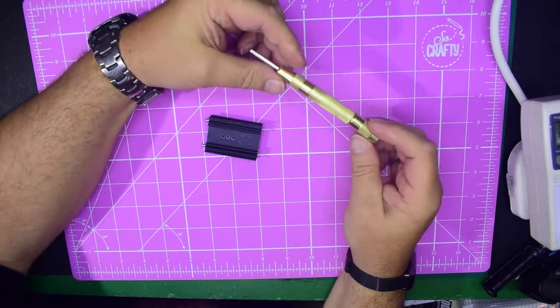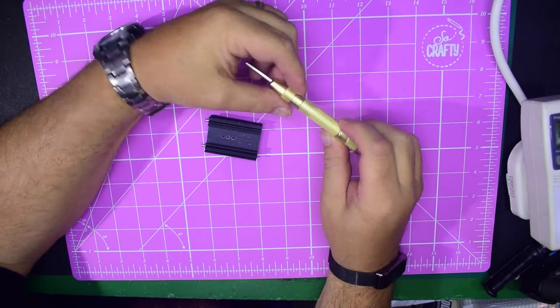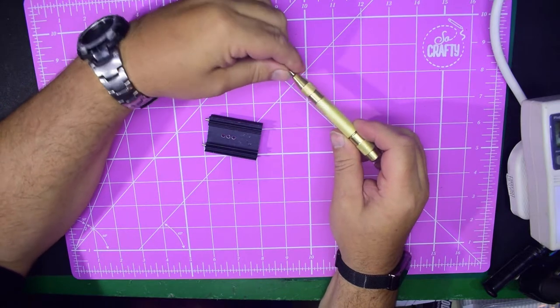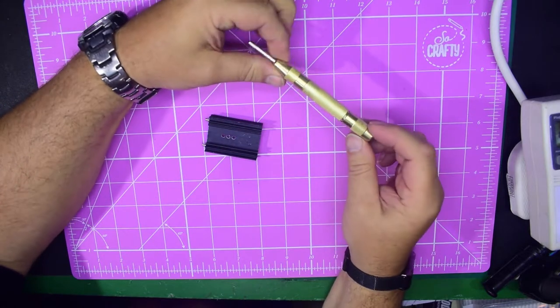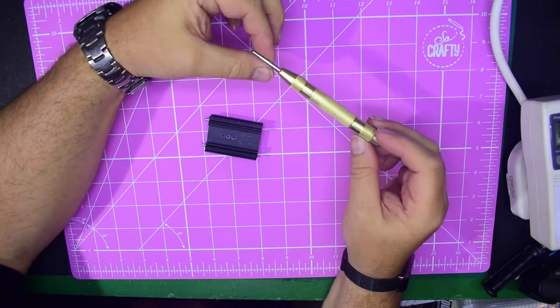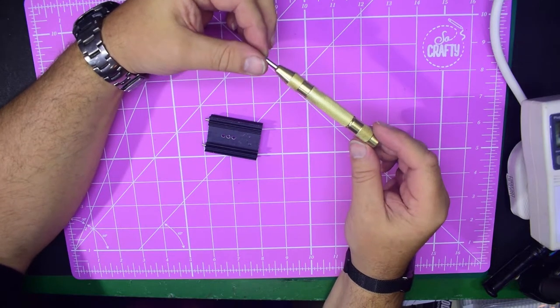That's the AliExpress automatic center punch. As I am in dispute, I'm not going to link to the listings until I get some sort of resolution. If you search AliExpress for brass automatic center punch, you may well find the listing.